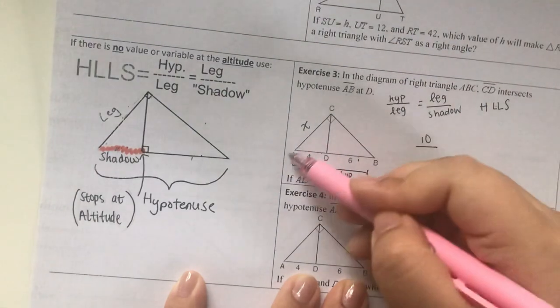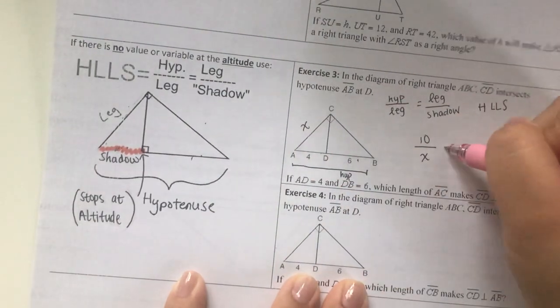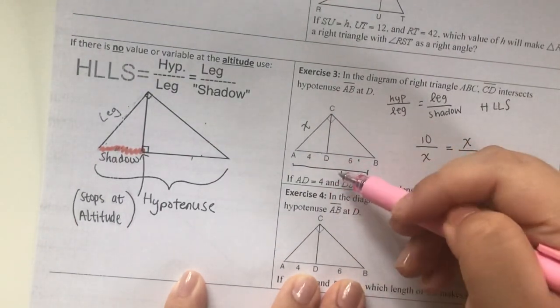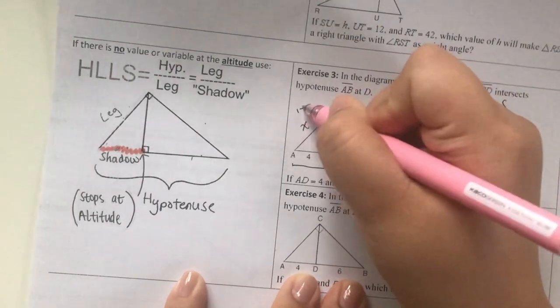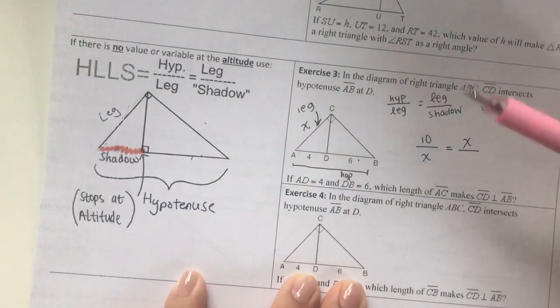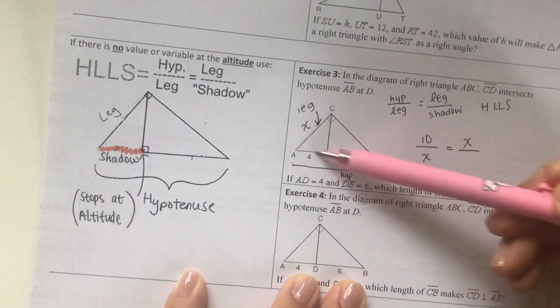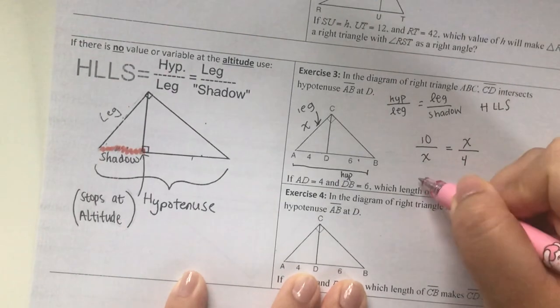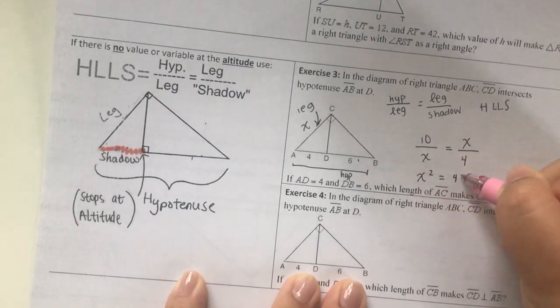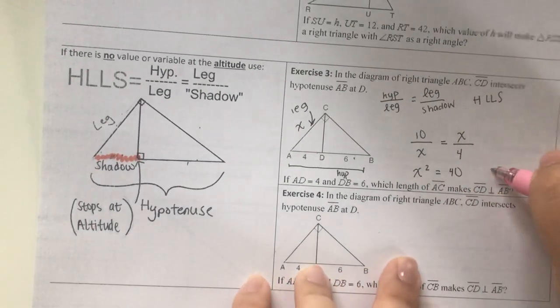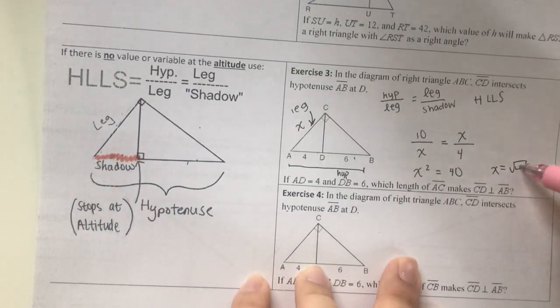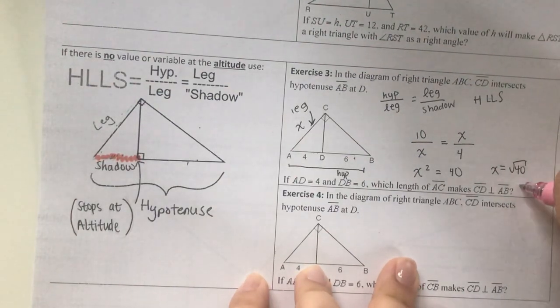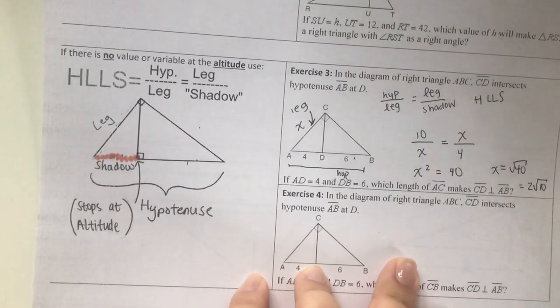10 over the leg AC, which I don't know, call it X, equals leg X over the shadow. Shadow is the line segment underneath the leg. This leg is here, the line segment underneath it is AD which is 4. Cross multiply: X squared equals 40. X equals radical 40. You can leave it in decimal form or simplest radical form, whatever you like.